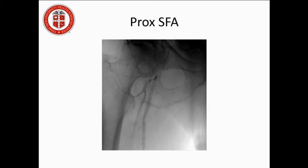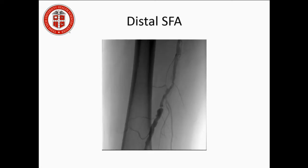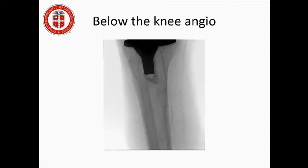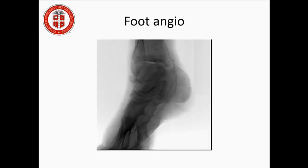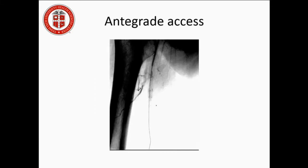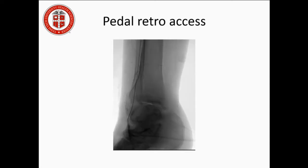I couldn't get any videos as we're currently doing an upgrade, so I was only able to get pictures. Here you see the SFA and the profunda, with the distal SFA diffusely diseased. Below the knee angio shows reconstitution of the peroneal artery and the distal posterior tibial. The foot angio shows the posterior tibial but not the dorsalis pedis. Here we start the antegrade access, and here's the retrograde access via the pedal.